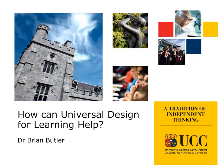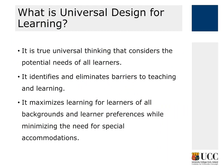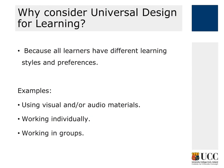How can Universal Design for Learning help? Universal Design for Learning is true universal thinking that considers the potential of all learners. It identifies and eliminates barriers to teaching and learning, and it maximizes learning for learners of all backgrounds and learner preferences while minimizing the need for special accommodations.